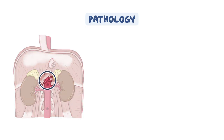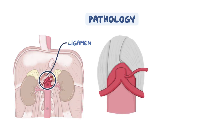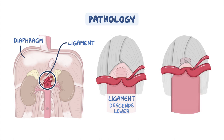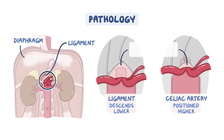MALS is thought to be caused when the ligament attached to the diaphragm descends lower, or the celiac artery is positioned higher on the aorta, resulting in the celiac artery being compressed beneath the fibers of the median arcuate ligament as it passes into the abdomen.